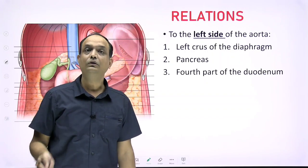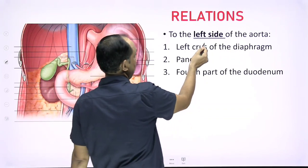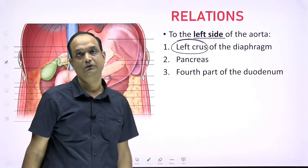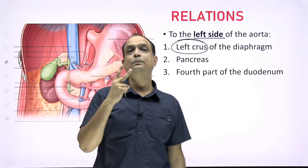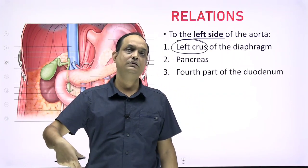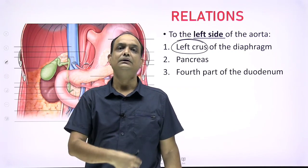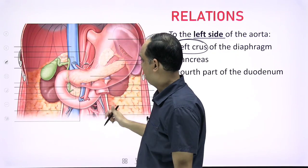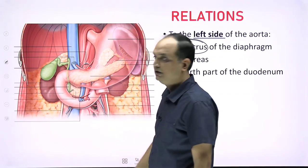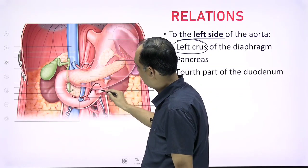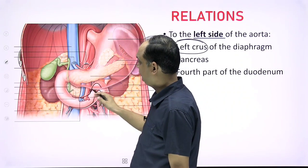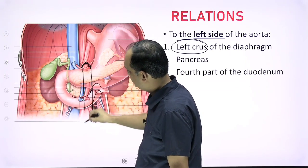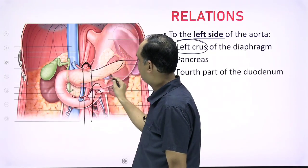On the left side, you have the left crus of the diaphragm. Apart from that, the pancreas and the fourth part of the duodenum are present on the left side. So the duodenum appears in relation to the aorta at two places: the horizontal third part crosses anteriorly, and the small ascending fourth part is present on the left side. In this image, you can see the horizontal third part, the fourth part of the duodenum, and the abdominal aorta with its hiatus. The pancreas is related anteriorly and on the left side.